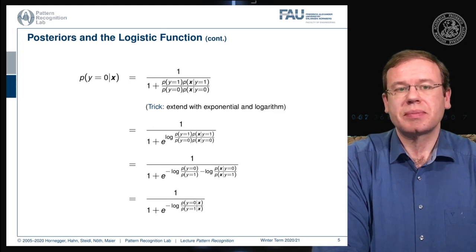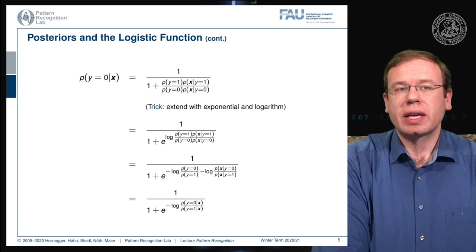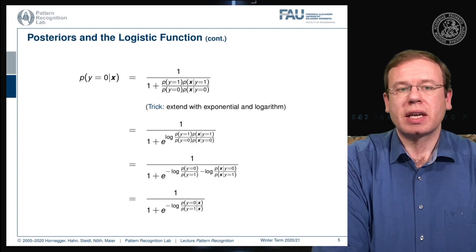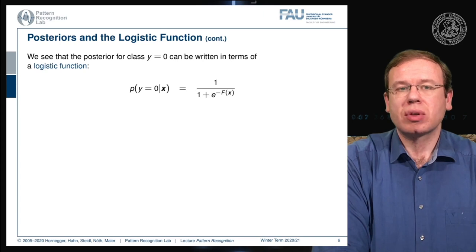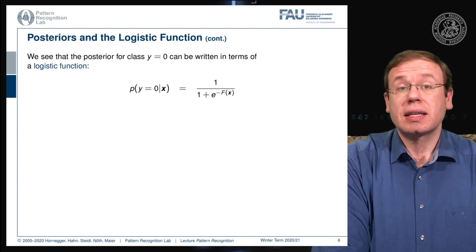We have found a way to rearrange P(Y=0|X) into a very interesting formulation. This particular shape is called the logistic function, given as 1 over 1 plus e to the power of minus F(X), where F(X) is actually the decision boundary.